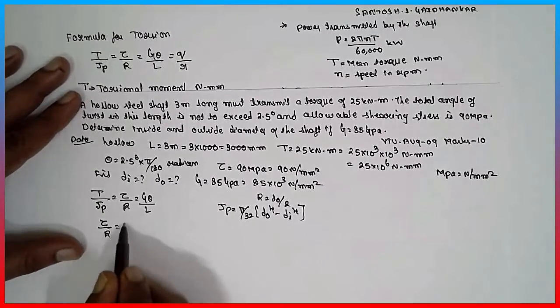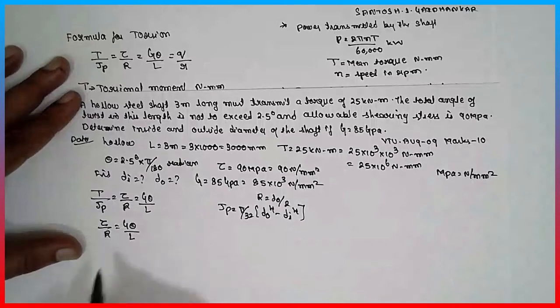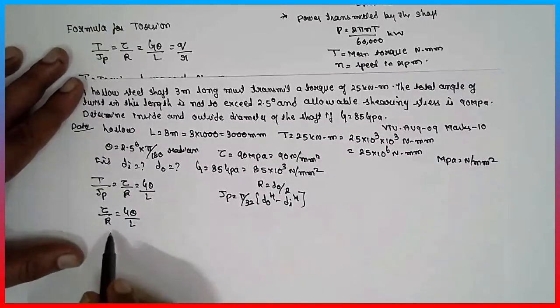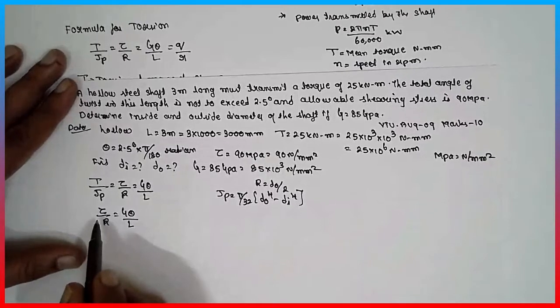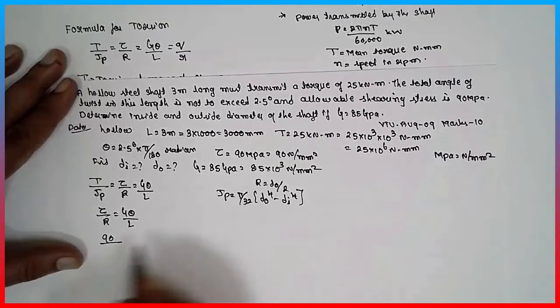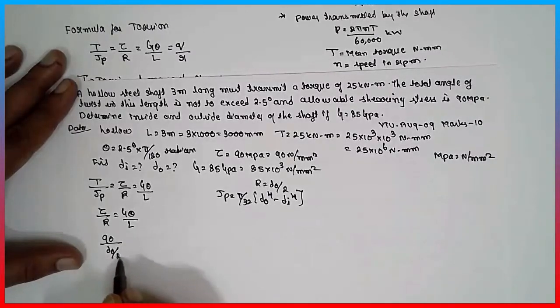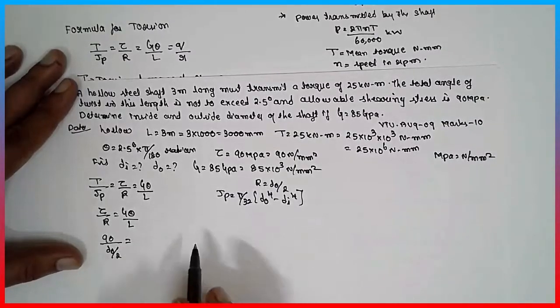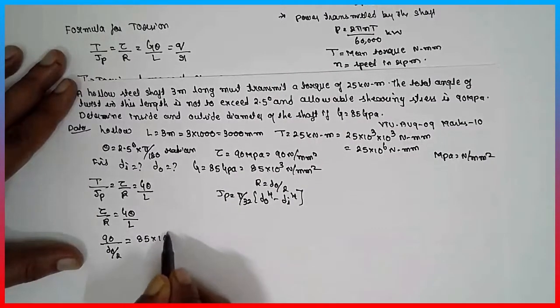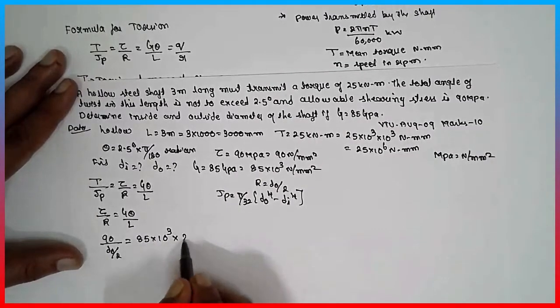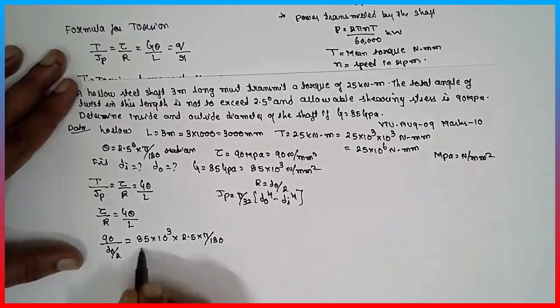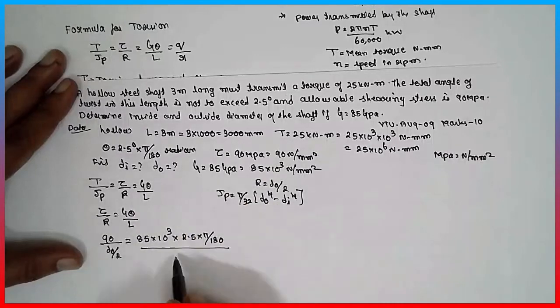Tau by R is equal to G theta by L. Now, tau is 90, R is D naught by 2, G is 85 into 10 raise to 3, theta is 2.5 into pi by 180, divided by length 3000.